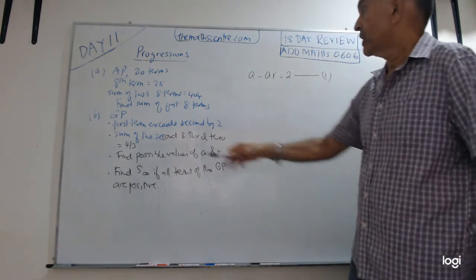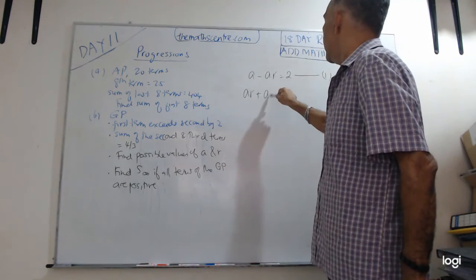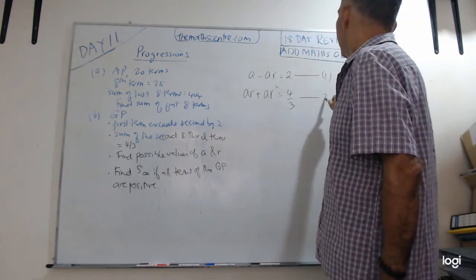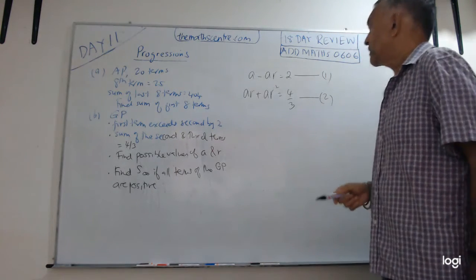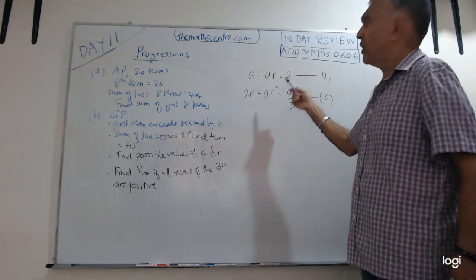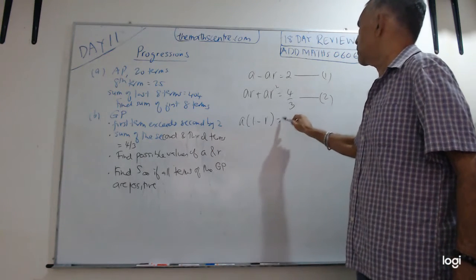a minus ar equals 2. The sum of the second and the third terms, ar plus ar squared equals 4 over 3. The sum of the second and third terms. So you have two equations you can easily solve.